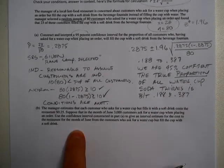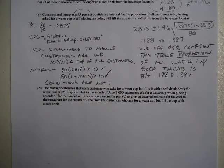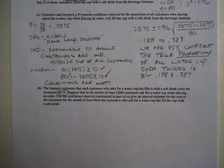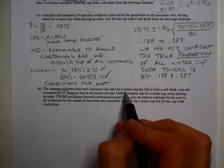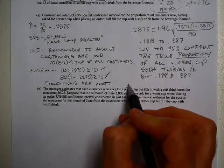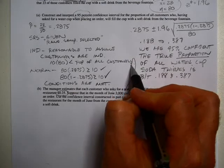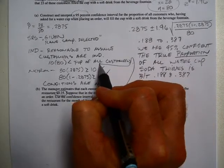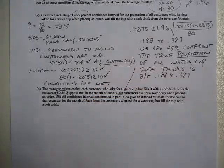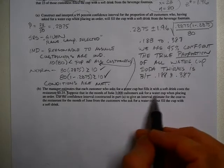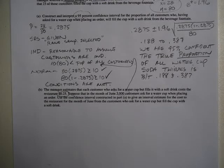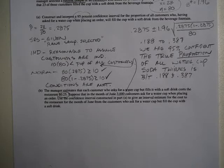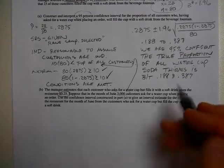Now, going on to B, it says the manager estimates that each customer who asks for a water cup but fills with a soft drink cost the restaurant 25 cents. Suppose in the month of June, 3,000 customers ask for a water cup when placing an order. So what would the loss to the restaurant be, if our proportions are correct?